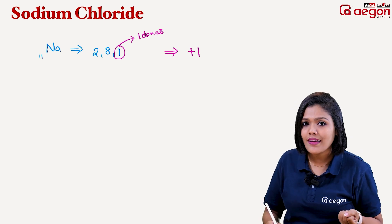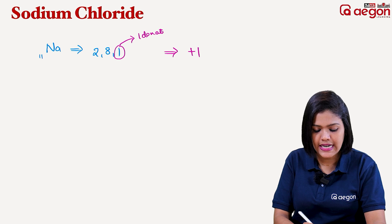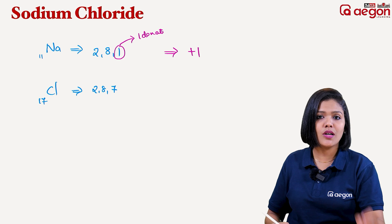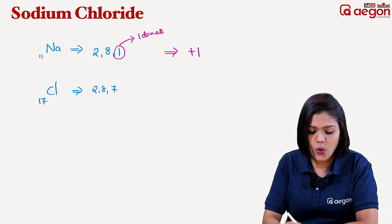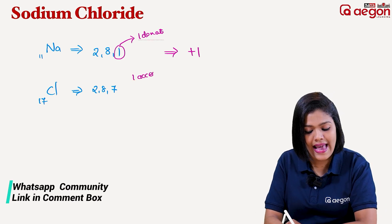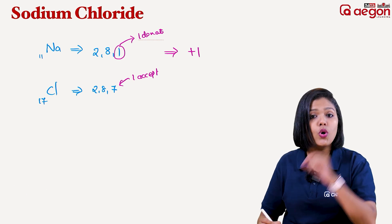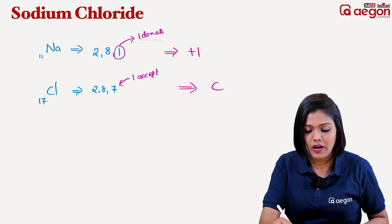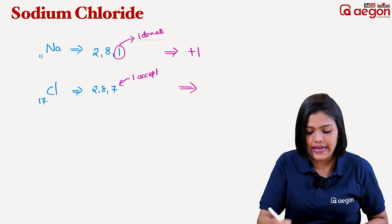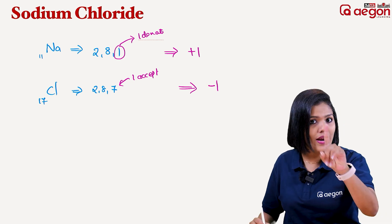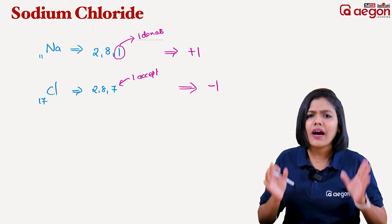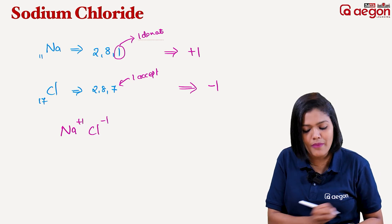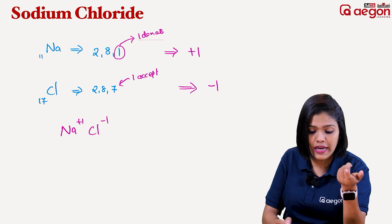Sodium donates an electron, so it has a positive charge. Now this is Chloride — Chlorine's atomic number is 17. Its electronic configuration is 2, 8, 7. Chlorine needs one electron to complete its outermost shell, so it accepts one electron and becomes 2, 8, 8. Therefore Chloride has a minus 1 charge.